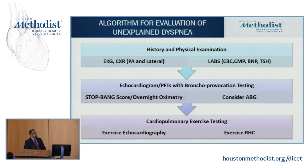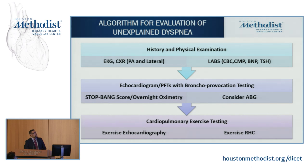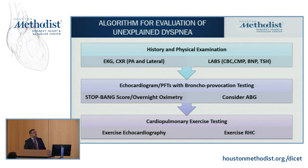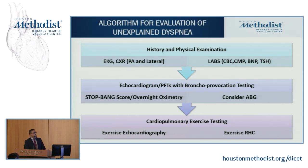The algorithm starts with history and physical examination. All patients with dyspnea should get a PA lateral chest x-ray and an EKG. Basic labs are very important — particularly a CBC to rule out anemia, and a complete metabolic panel. BNP is a very strong test with high sensitivity for ruling out a cardiac etiology, particularly heart failure, though it can also be elevated in valvular heart disease. TSH should also be obtained. These basic tests help rule out many non-cardiac causes of exertional dyspnea.